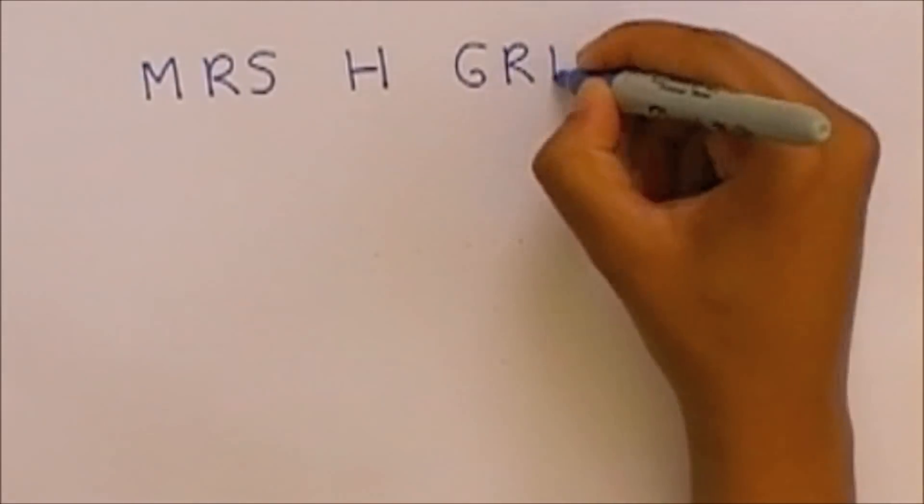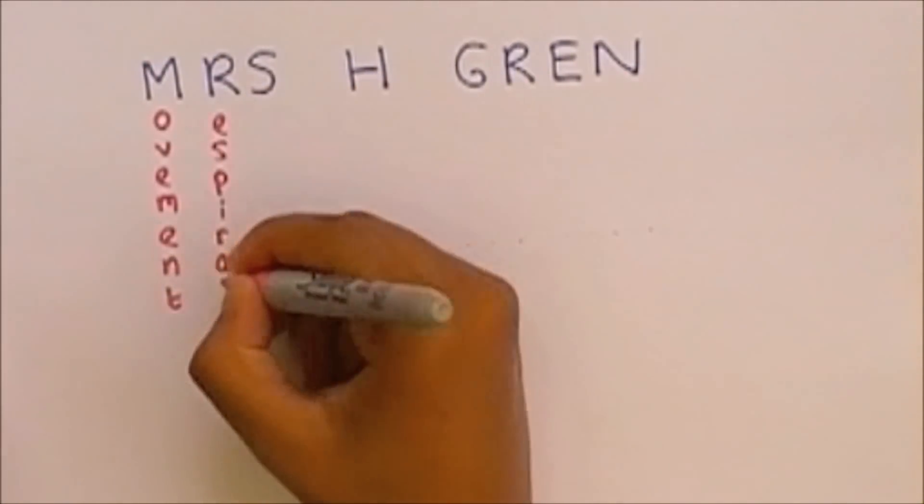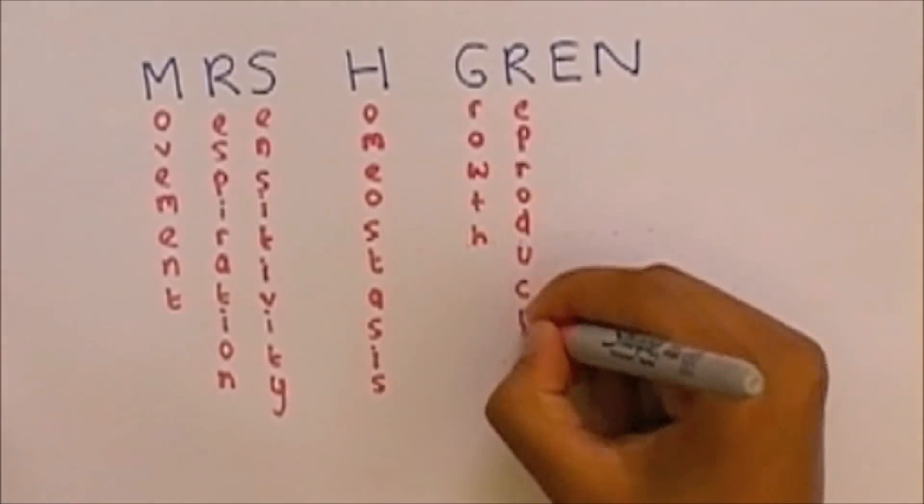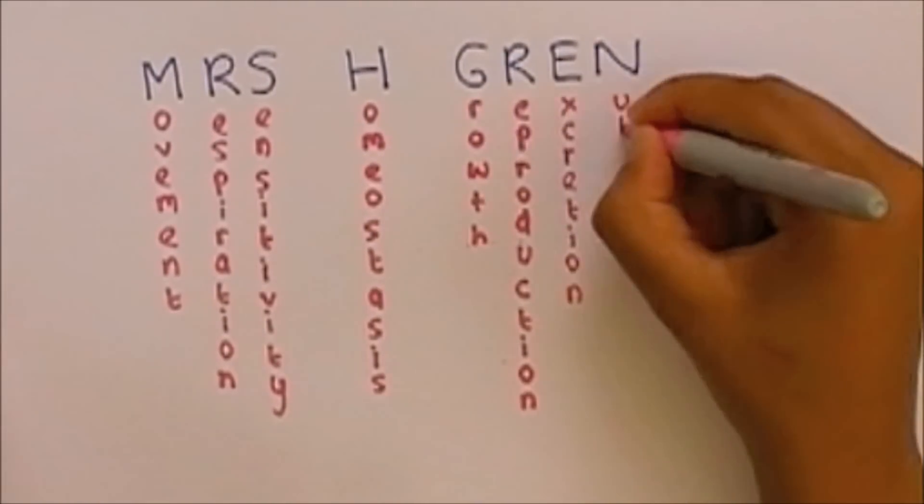A simple and effective way to remember all eight characteristics is by using the acronym Mrs. H. Gren. This acronym represents movement, respiration, sensitivity, homeostasis, growth, reproduction, excretion and nutrition.